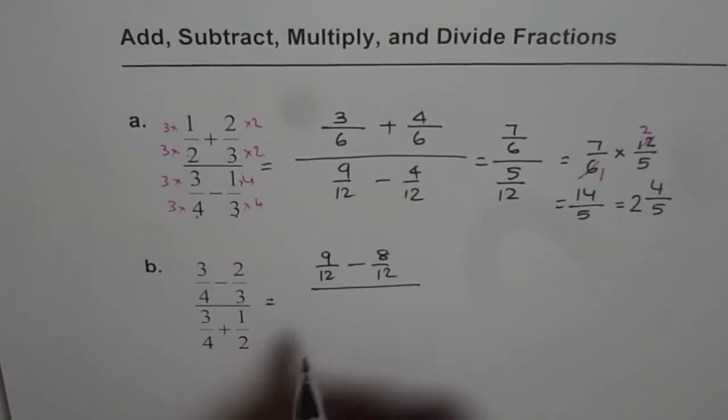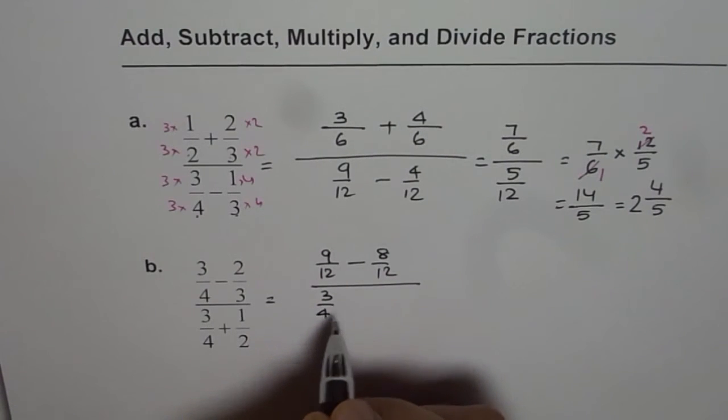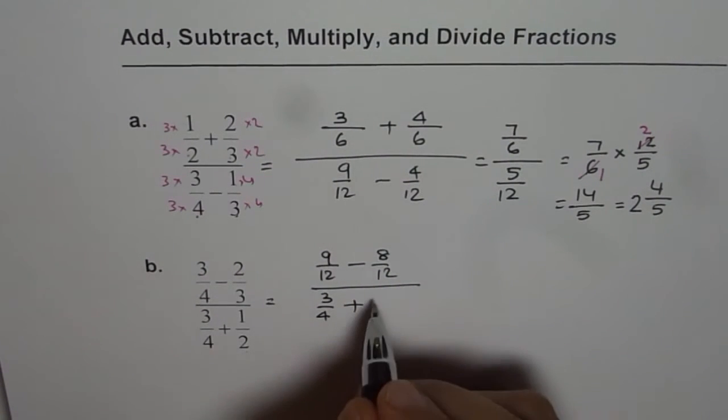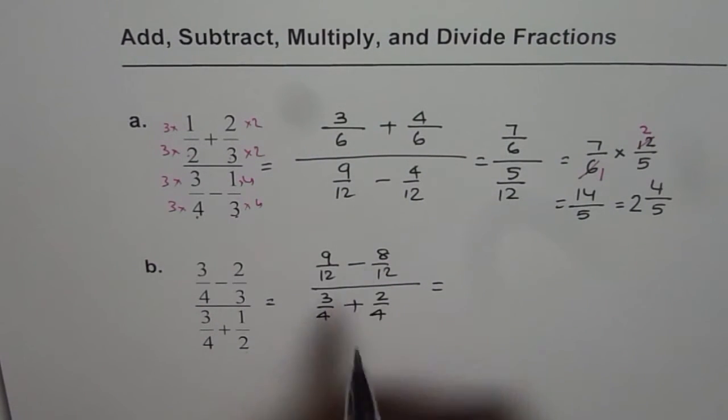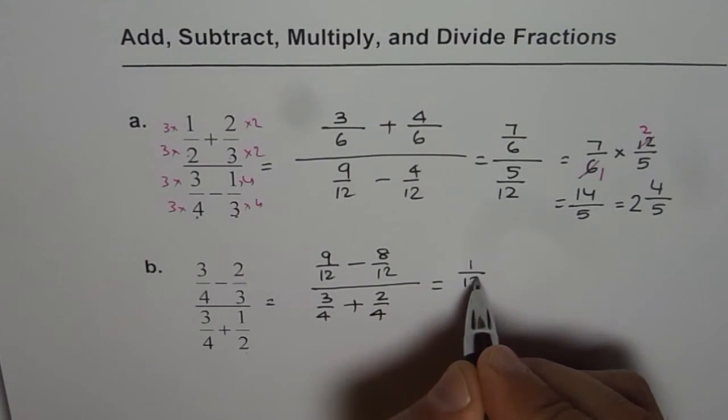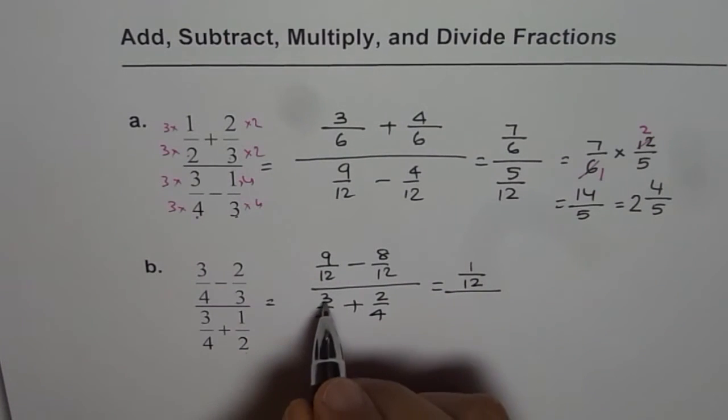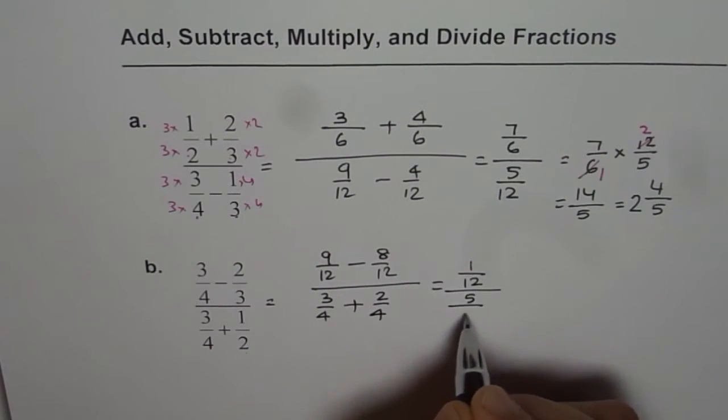Divided by 4 and 2. Common denominator is 4. So 3 over 4 is good. Plus we need to multiply these by 2. 2 over 4. That gives us 1 over 12 divided by 5 over 4.